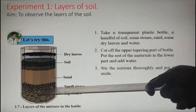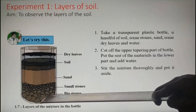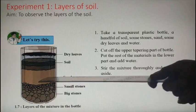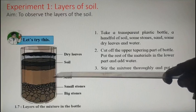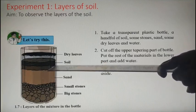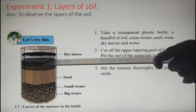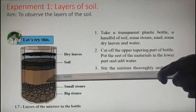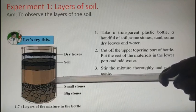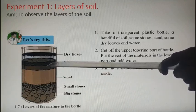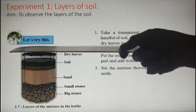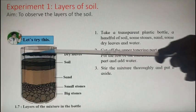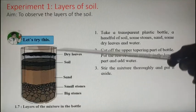You can see that the layers are clearly visible. Big stones are settled at the bottom. Above that you can see small stones. Above that you can see sand, and above sand you can see soil. Soil is above because soil has finer particles compared to sand. Dry leaves are floating on the water - the lighter particles float on the water. This way we can see clear layers.